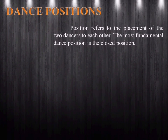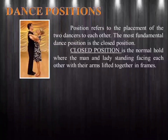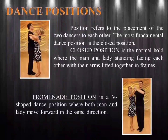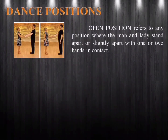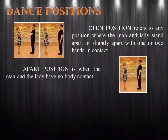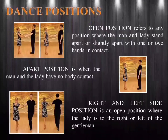Dance Positions. Position refers to the placement of the two dancers relative to each other. The most fundamental is the closed position, where the man and lady stand facing each other with arms lifted together in frames. Promenade position is a V-shaped position where both move forward in the same direction. Open position is where the man and lady stand apart with one or two hands in contact. Apart position involves no body contact. Right and left side position is an open position where the lady is to the right or left of the gentleman.